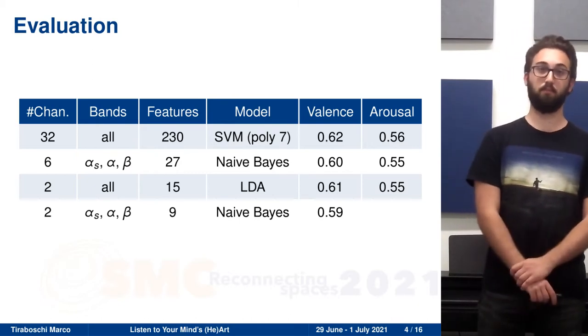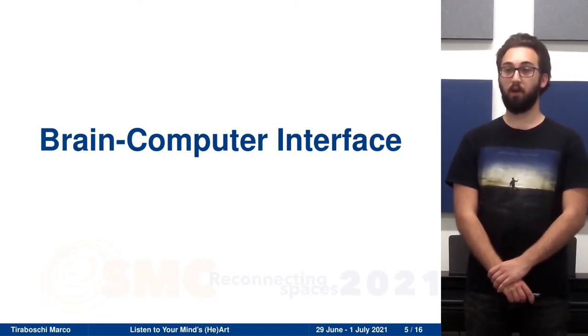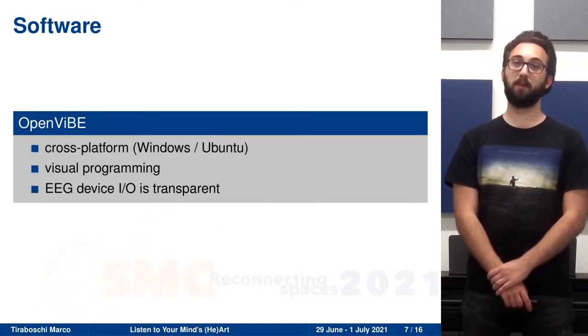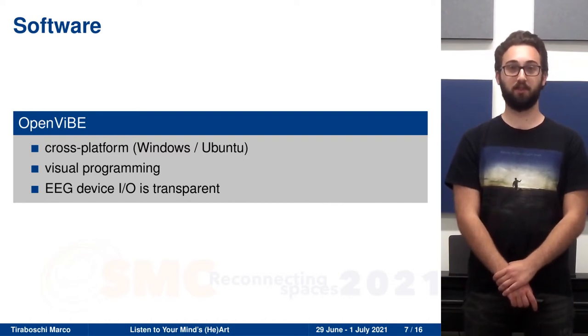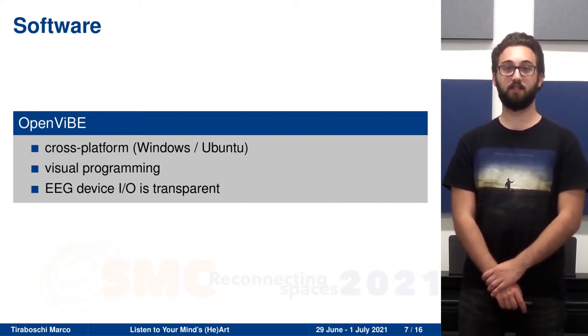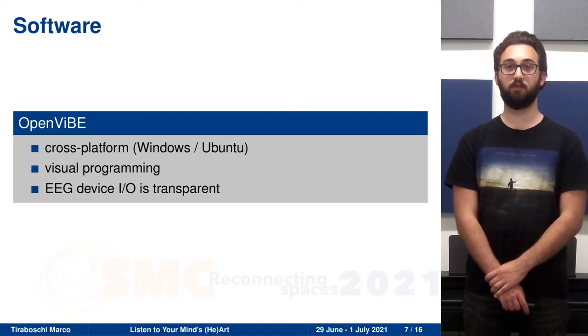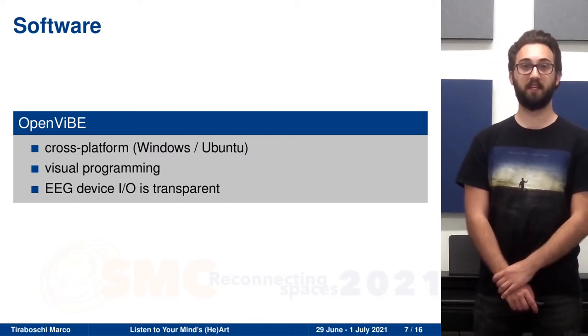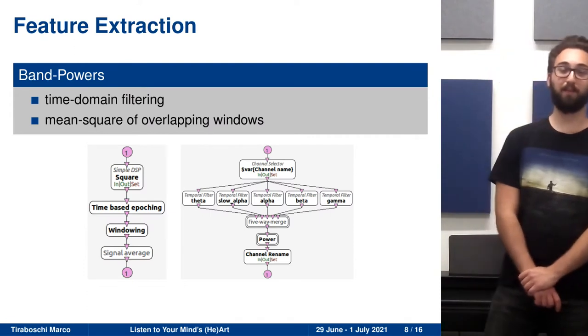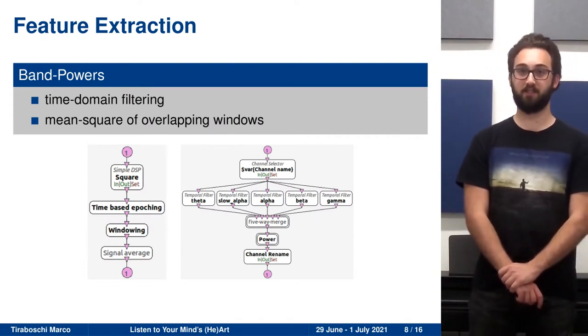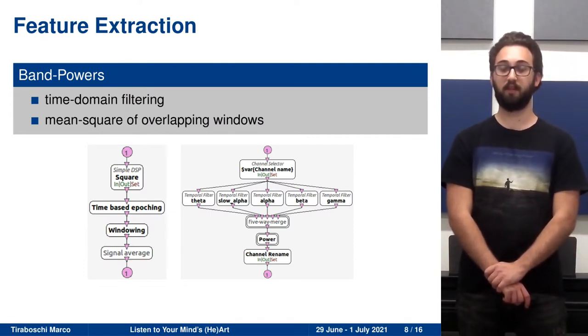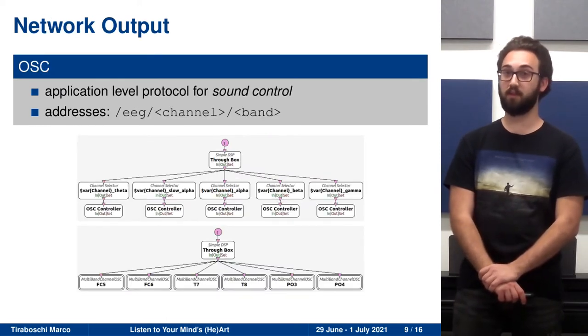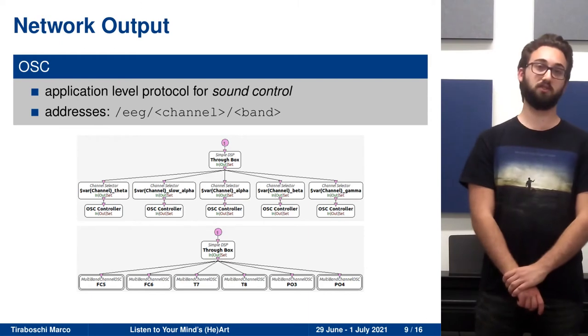So we then designed a six-channel brain-computer interface. We used hardware from G.Tec. And then we used the OpenViBE environment to develop the software. This environment is very convenient because it allows to develop software that is independent from the specific EEG headset. In OpenViBE, we programmed the feature extraction component of the software. And then we also used OpenViBE to communicate those features via OSC.